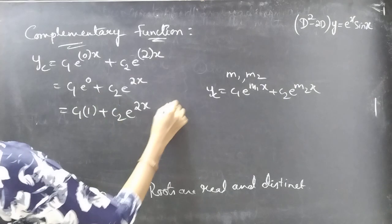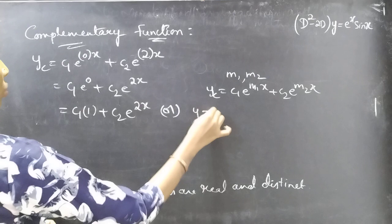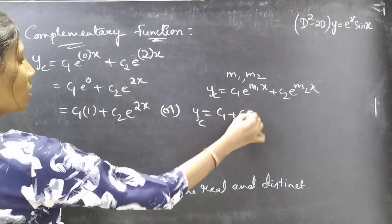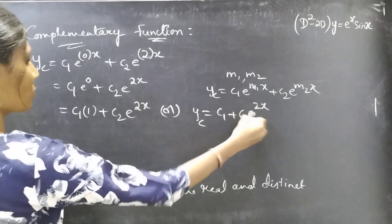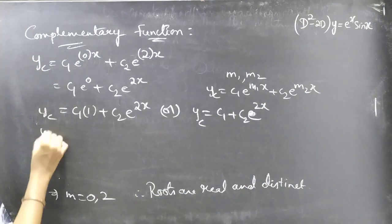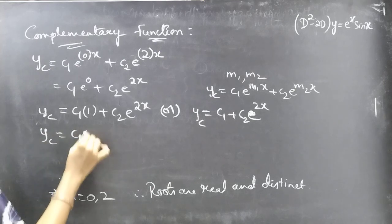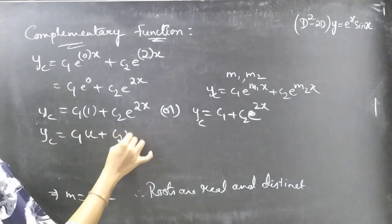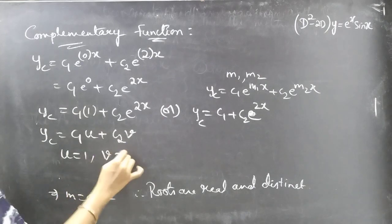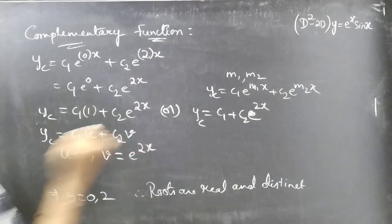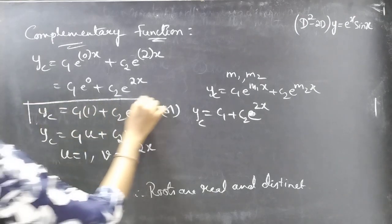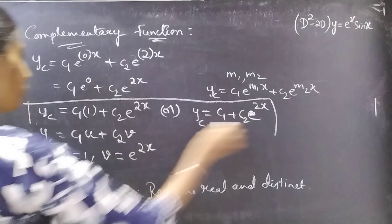This gives yc = c₁ + c₂e^(2x). Comparing with the form c₁u + c₂v, we get u = 1 and v = e^(2x). This is our complementary function.